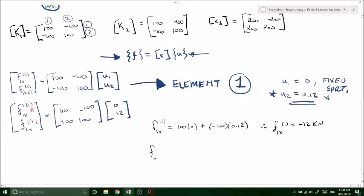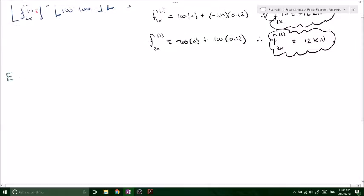Similarly, we have f2 of x due to the second element. Solve for the internal reactions due to the second element. Remember, k is still the same, so our stiffness matrix is going to be still 100. And we have u2 and u3. So we have u2 and u3 now because if you look at our picture,